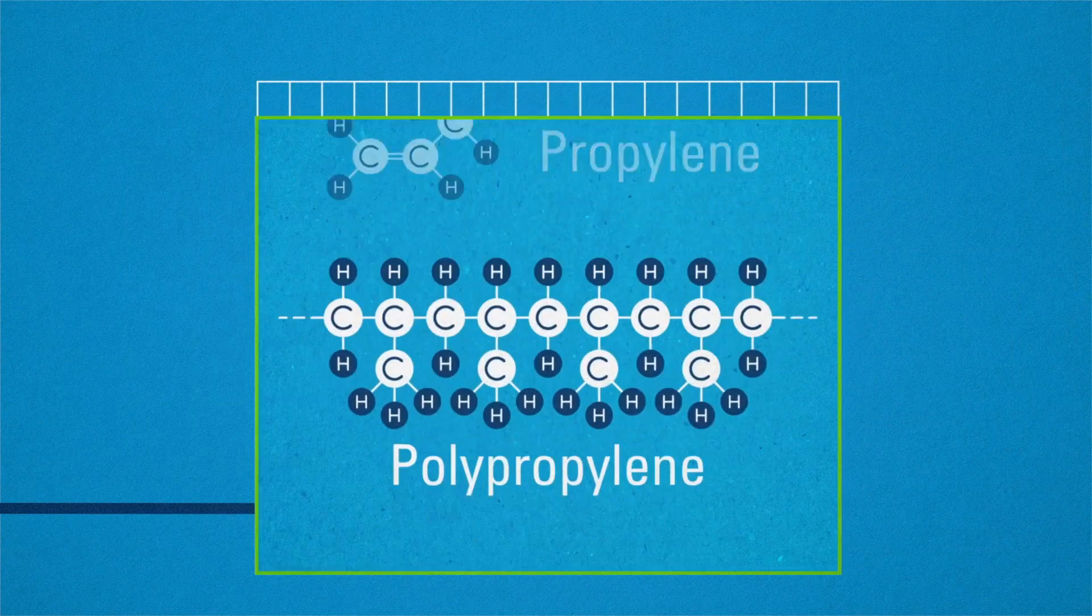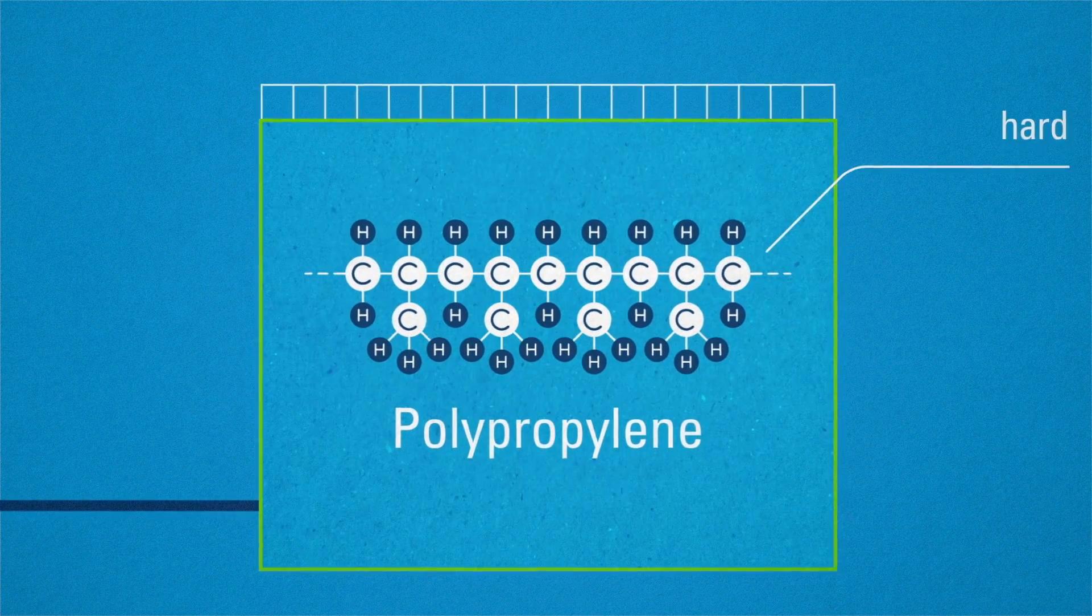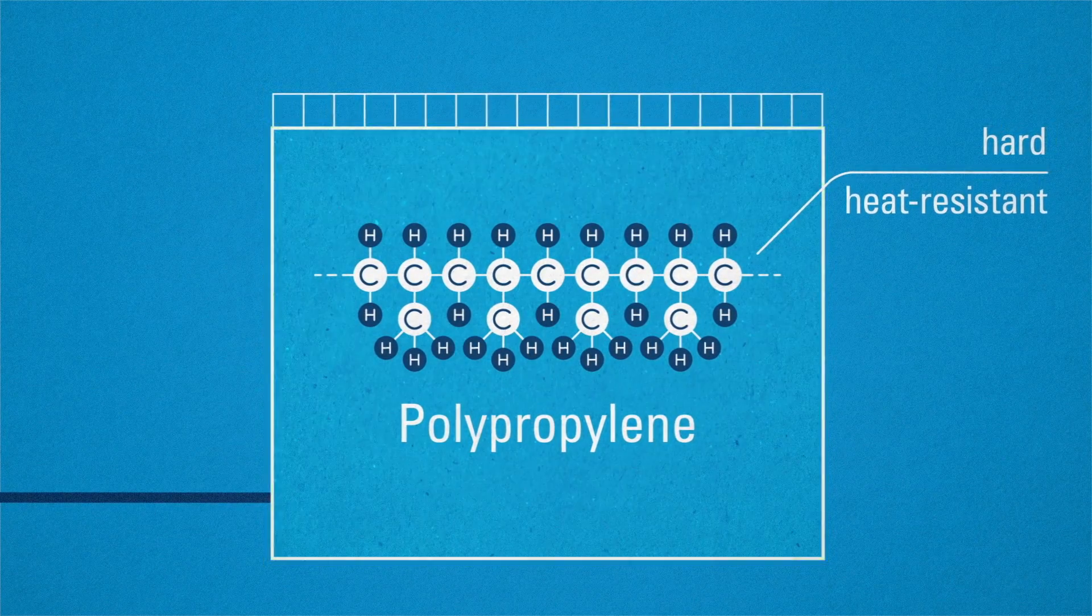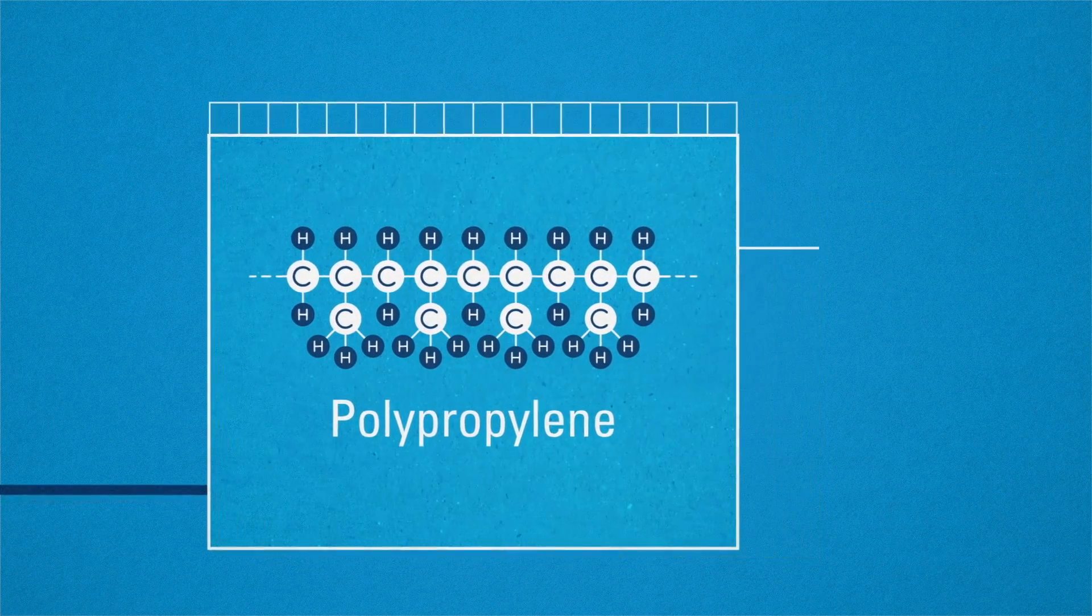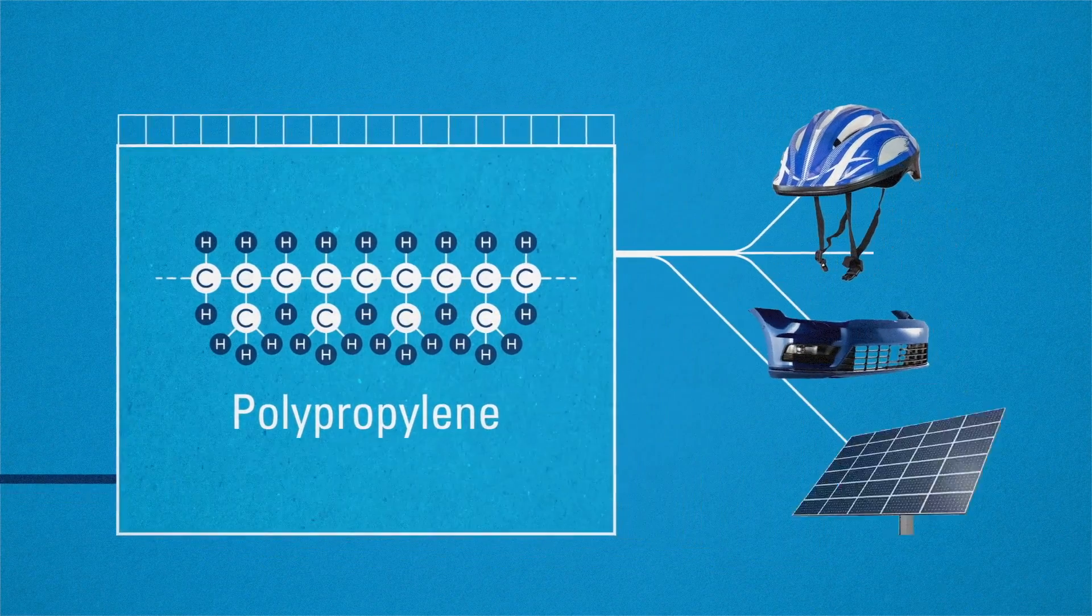From propylene we get polypropylene. This is even tougher than polyethylene and is better at coping with heat. You can find it in car parts or medical syringes, for example.